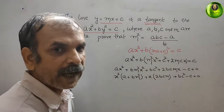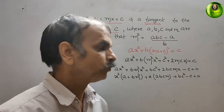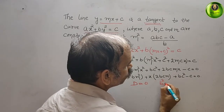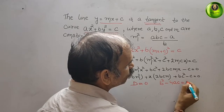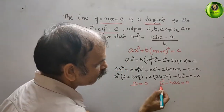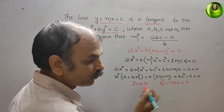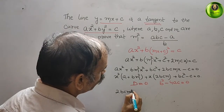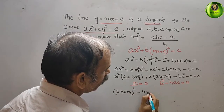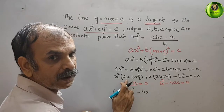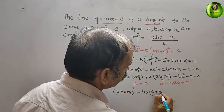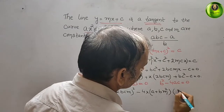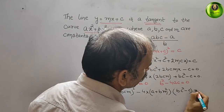Since the line is a tangent to the curve, the discriminant is equal to zero. Applying the discriminant condition b² - 4ac = 0, where A = (a + bm²), B = 2bcm, and C = (bc² - c), we set (2bcm)² - 4(a + bm²)(bc² - c) = 0.